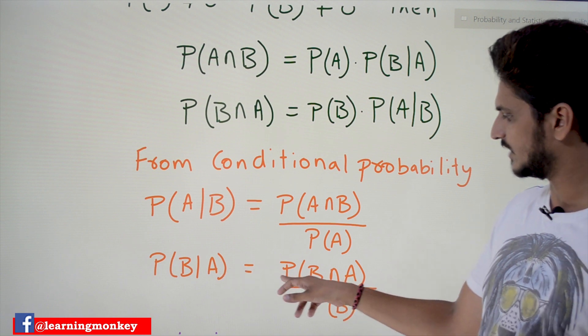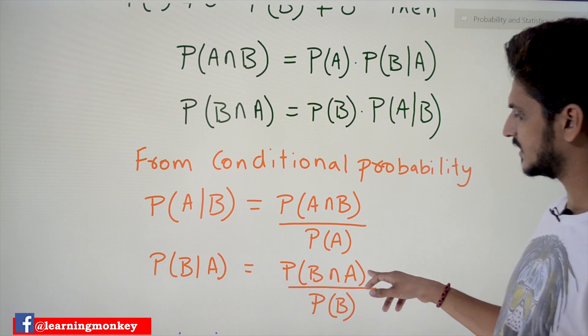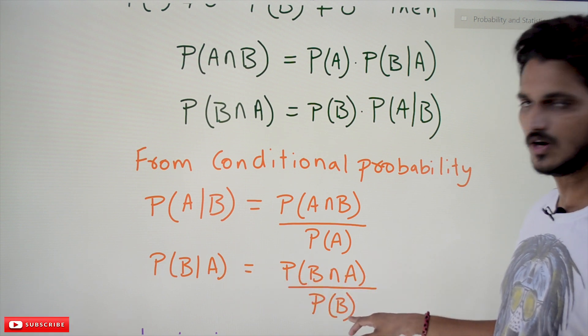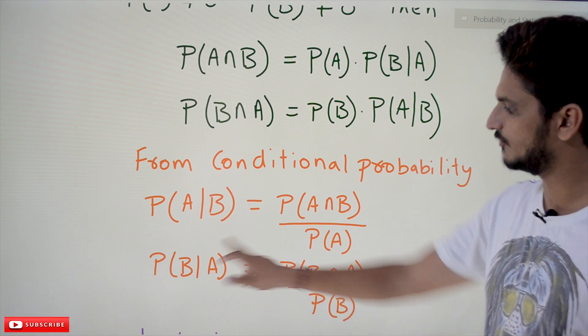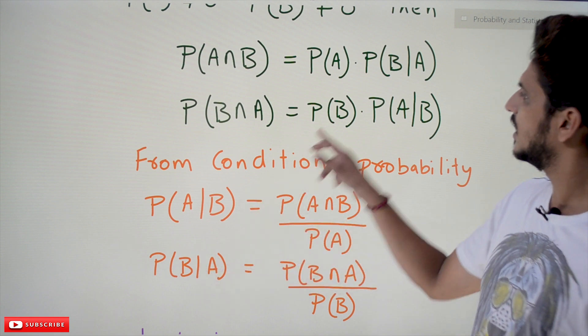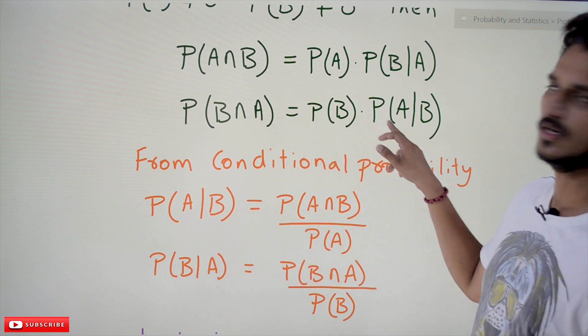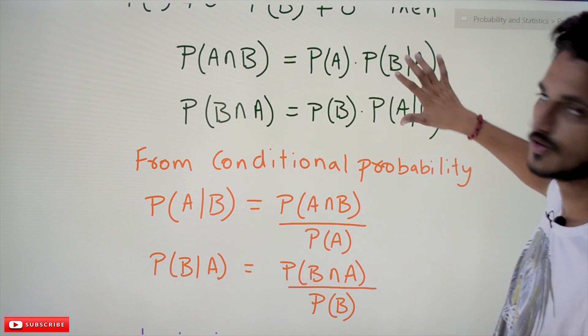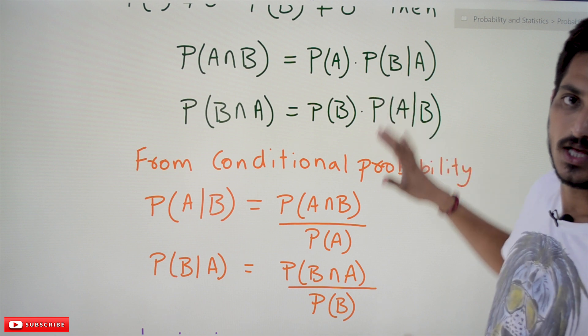Similarly, P(B|A) — the probability of B given A has happened — is defined as P(B∩A) divided by P(A). If you move P(A) to the other side, you get the other form of the multiplication rule equation. This is what the multiplication rule says, derived directly from the definition of conditional probability.